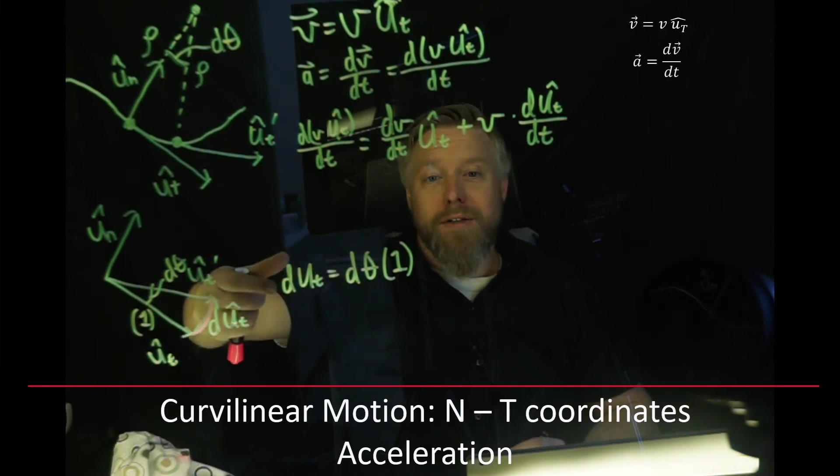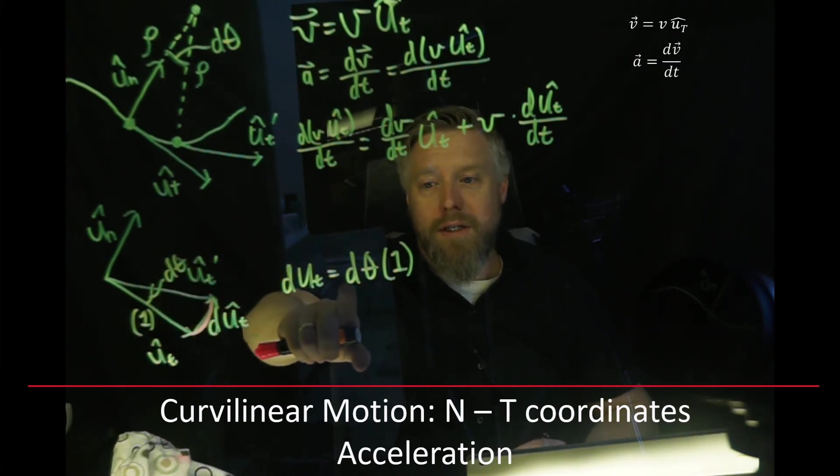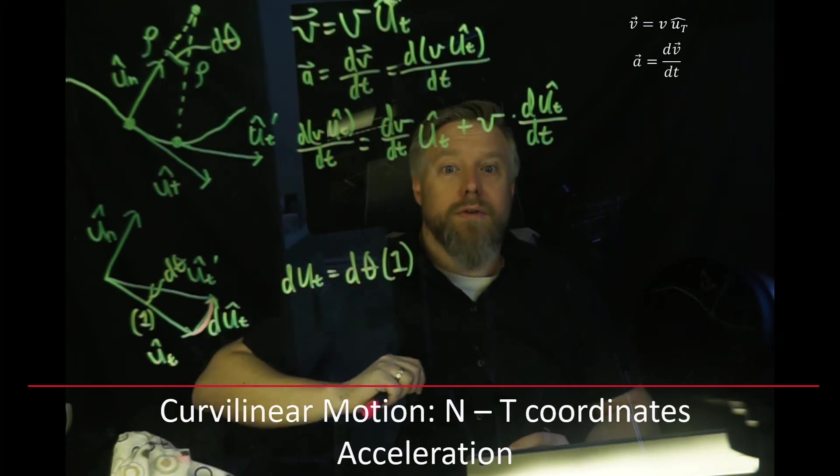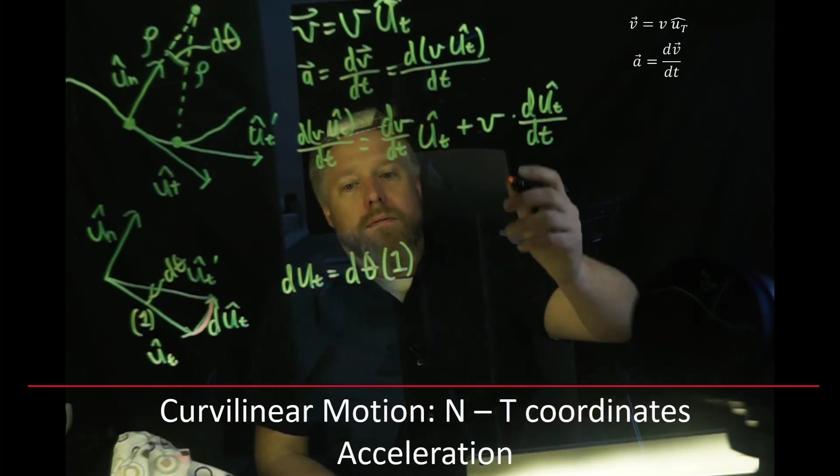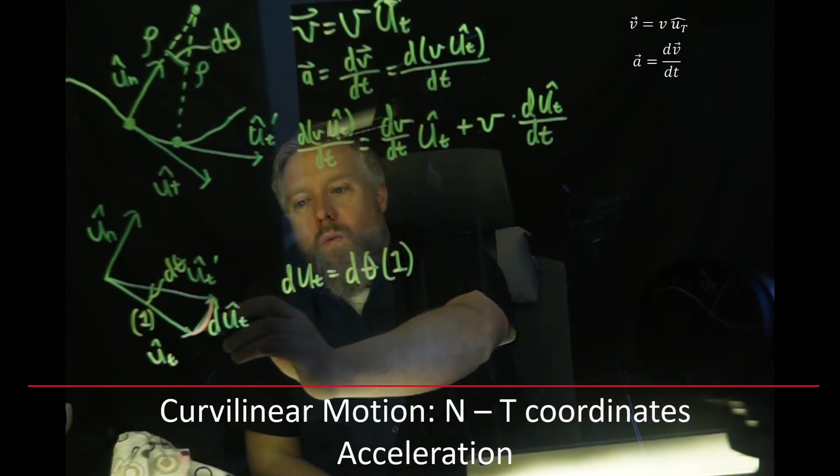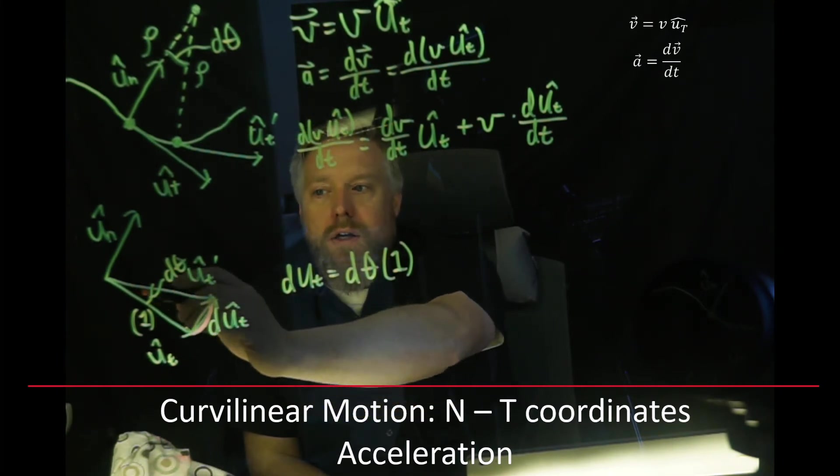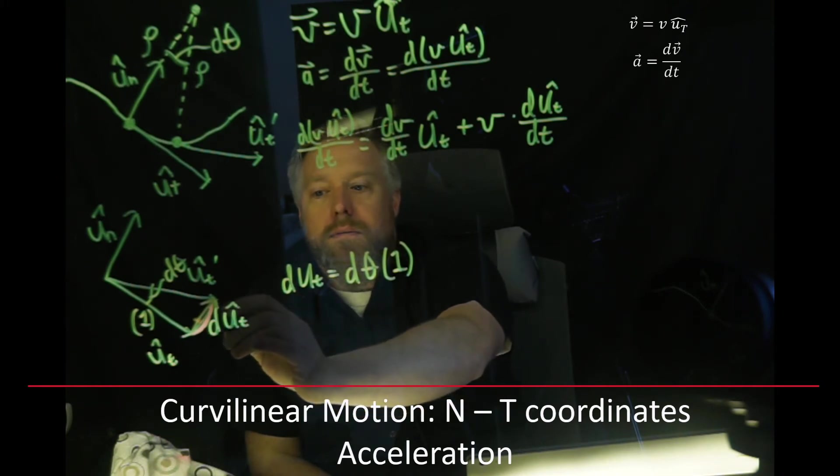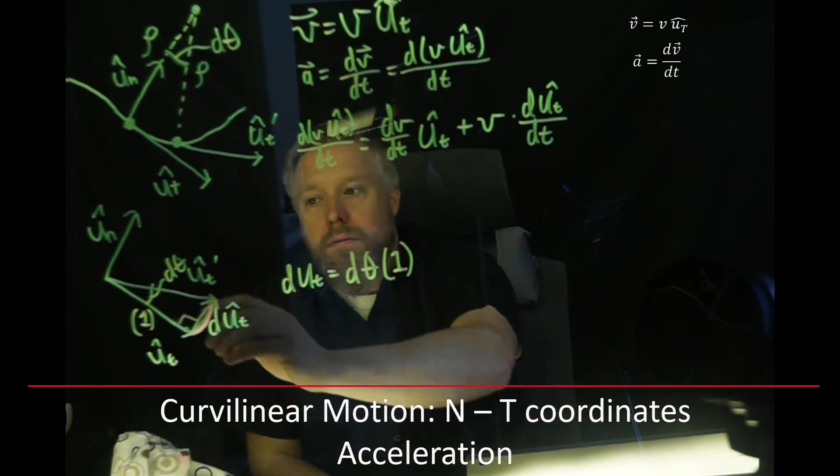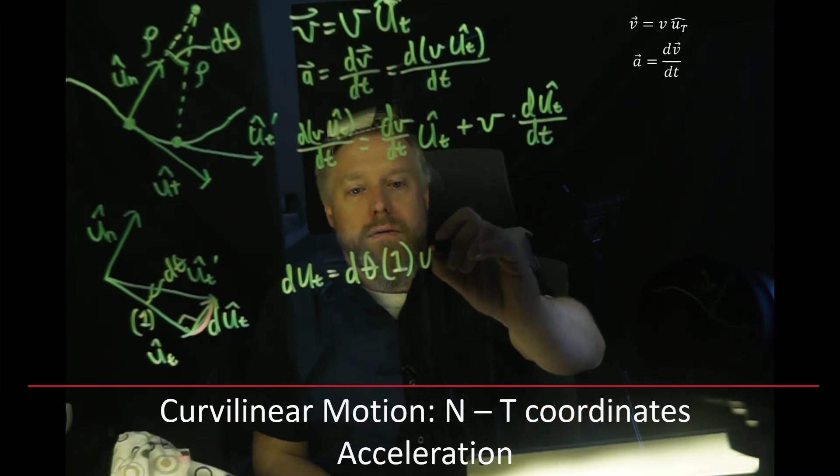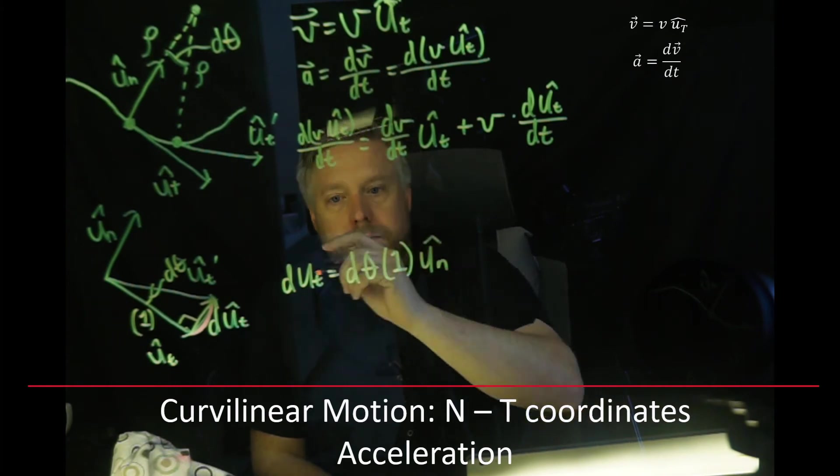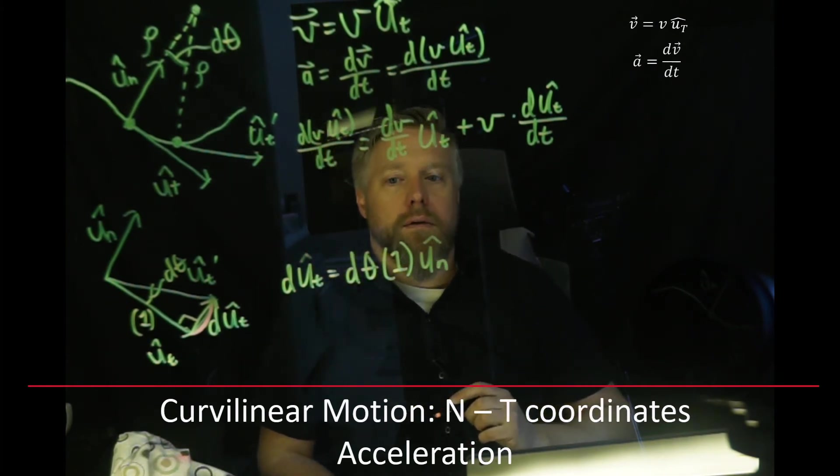So we can say with arc length that dUT equals dθ times one. Now these are scalars. I haven't put a direction in yet. This is a scalar equation just saying the magnitude of dUT is going to be equal to the magnitude of dθ for very small thetas because we're looking at the difference between an arc and a straight line. But the limit as it approaches zero, these are going to be the same. That's the magic of calculus. Then if we look at the drawing, what direction is our dUT facing? It's not in the UT direction. It's perpendicular to it. What's perpendicular to UT? UN. So this is actually in the UN direction. So our dUT is going to be equal to dθ in the UN direction.